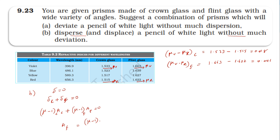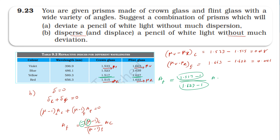Rearranging: (μ − 1)_crown / (μ − 1)_flint = −A_flint / A_crown. The negative sign indicates the two prisms are inverted relative to each other. Substituting values: (1.517 − 1) / (1.627 − 1) = 0.517 / 0.627 = 0.932. So the angle of prism for flint is 0.932 times the angle of the crown prism, which is less than one, confirming the flint angle is smaller.